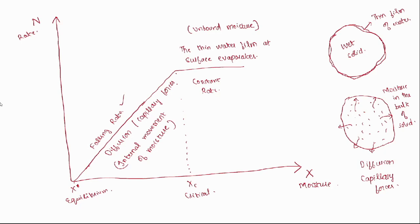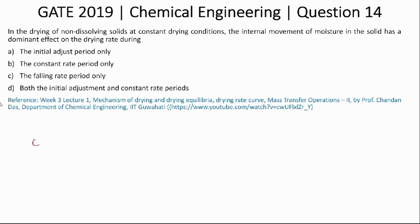So the surface movement of moisture occurs at the constant rate regime, and the internal movement of moisture occurs at the falling rate regime. The answer is therefore (C): the falling rate period only.